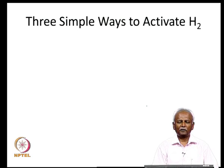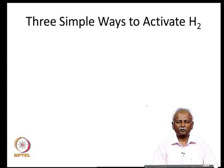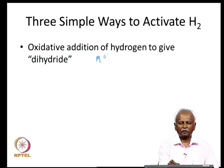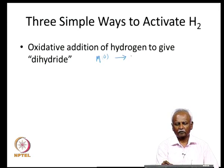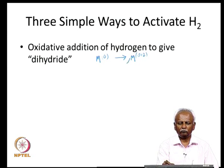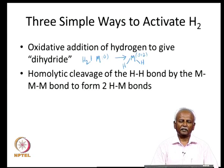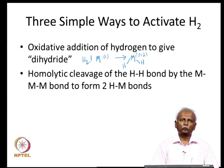Let us back up a little and talk about the ways to activate hydrogen. There are three ways in which we can activate hydrogen using a transition metal complex. The first is the oxidative addition of hydrogen to give a dihydride. In this case, the metal in the 0 or n oxidation state goes to a +2 oxidation state and forms two bonds to hydrogen. It is also possible to do a homolytic cleavage of the H-H bond by using a metal-metal bond to carry out this reaction.